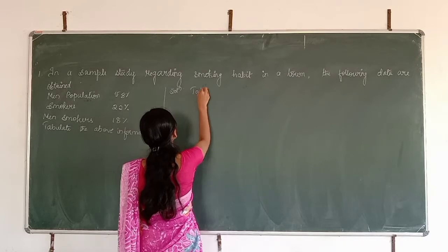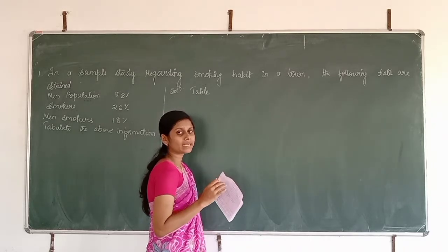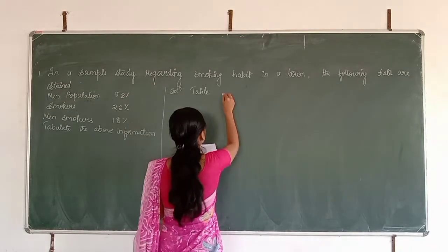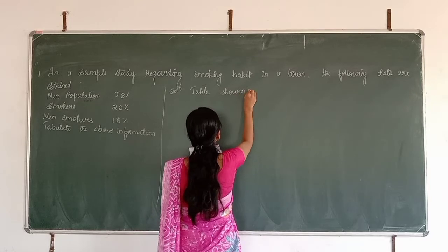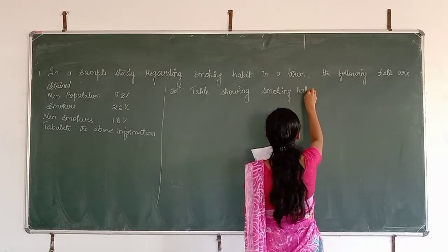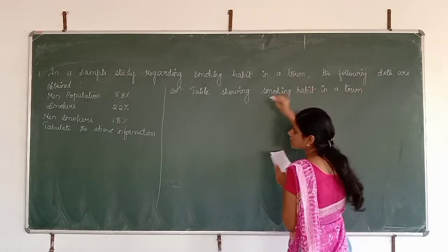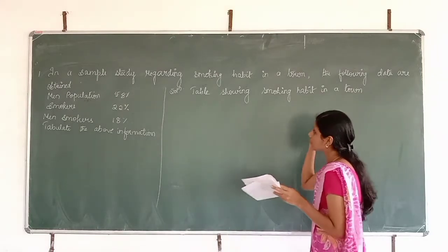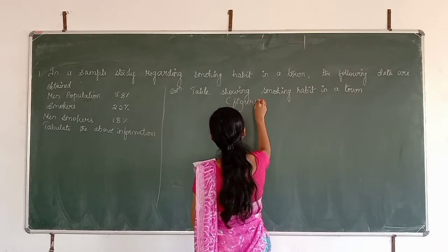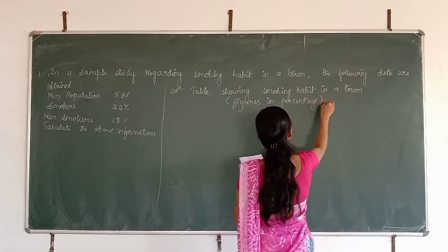This is not a blank table, so don't write 'blank table.' In the previous class we wrote 'blank table' in the title, but here we write only 'Table showing smoking habit in a town.' Since the information is given in percentage, we write in brackets as a subtitle: 'Figures in percentage.'